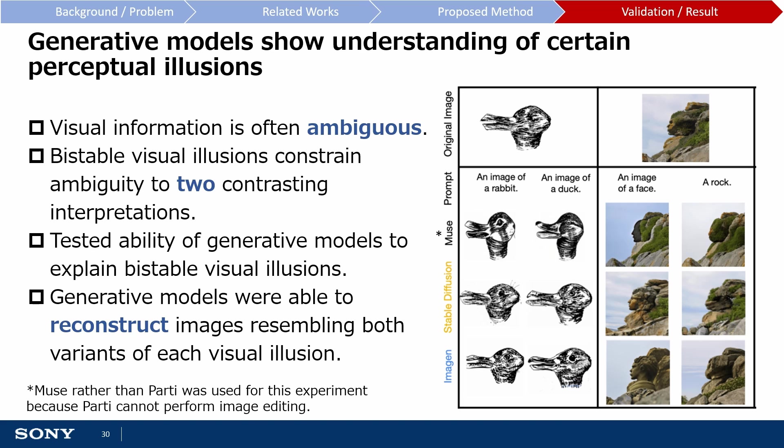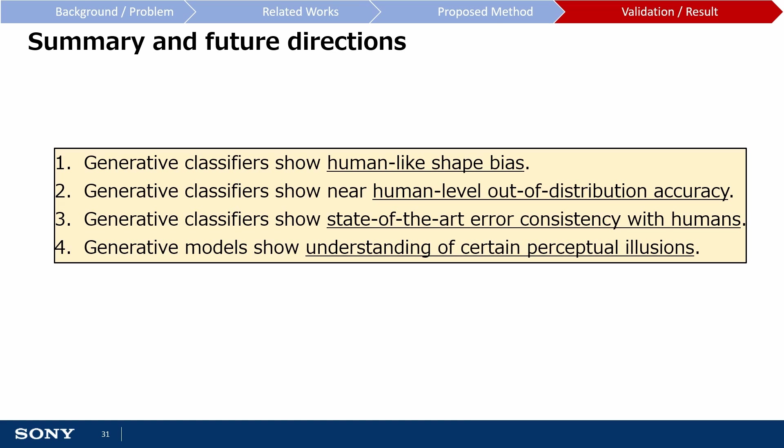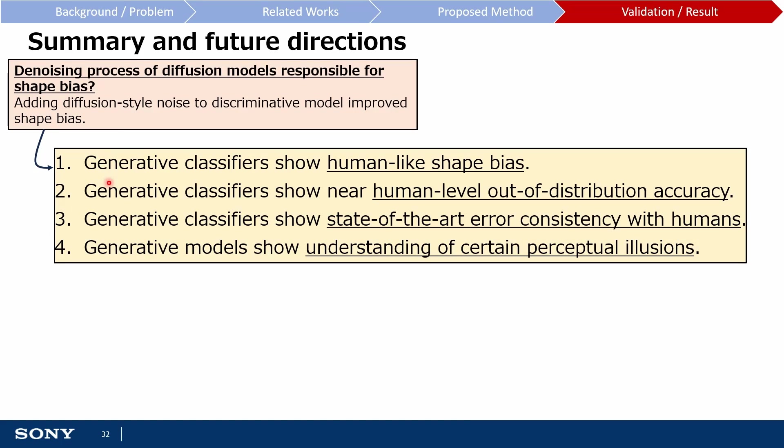With the main results discussed, let's move on to the summary. Firstly, generative classifiers display human-like shape bias, particularly true for diffusion-based generative models. In another experiment, the authors showed that adding diffusion-style noise to discriminative models improved their shape bias. Another way of thinking about shape and texture is in terms of low-frequency and high-frequency image details — the diffusion noise may disturb high-frequency texture details, forcing the model to focus on low-frequency shape features instead.